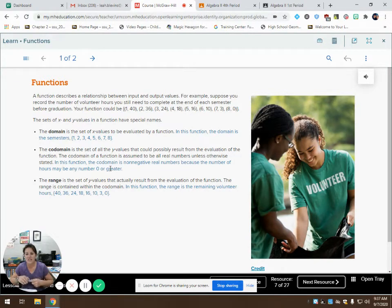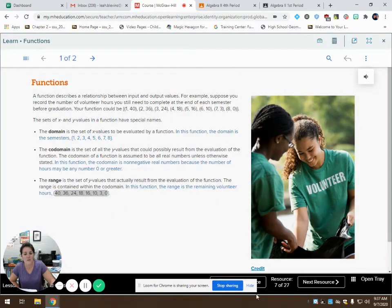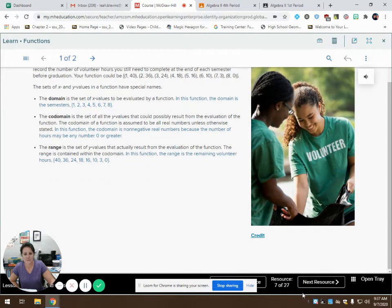The range is the set of values that actually result from evaluating the function. So if I look at this evaluation of these x values, these particular ones, then this is my given range. These are the output values that I'm going to get. That just kind of brings it home and lets you see an example.